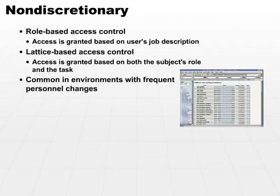Think about discretionary access control — if you turn over personnel frequently, you would have to rebuild the access control table and all the controls for a specific user every time. When one user leaves, you would have to disable the controls; when a new user comes in, you would have to re-enable the controls. When you have high turnover, it's a lot easier to say this database administrator role gets these particular permissions. So when a new DBA comes in, you assign that user to the DBA role, and he or she gets all the permissions that go along with that.